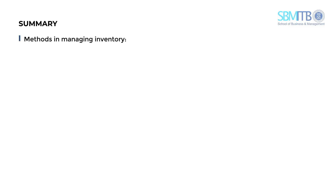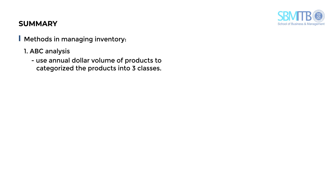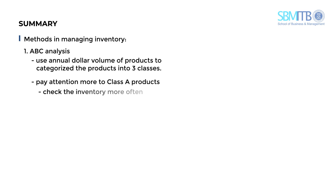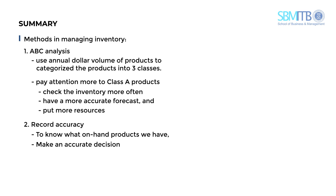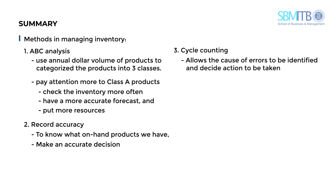Let's summarize what we have learned in this topic. We have several methods to manage inventory. The first method is ABC analysis, which uses annual dollar volume to categorize products into three classes. We need to pay more attention to class A products—check inventory more often, have more accurate forecasts, and put more resources into managing class A products. The second method is record accuracy, so the company knows what on-hand products they have to make accurate decisions. The third method is cycle counting, which allows the causes of errors to be identified, corrective actions to be taken, and accurate inventory records to be maintained.